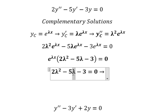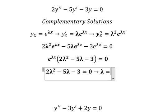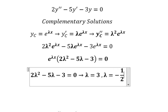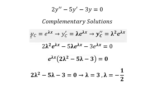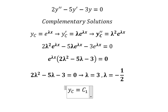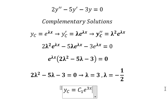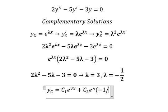Now we need to find the solutions of this characteristic equation, and we get lambda equals three and lambda equals negative one over two. So we write yc equals c1 times e to the power of three x, plus c2 times e to the power of negative one over two x.